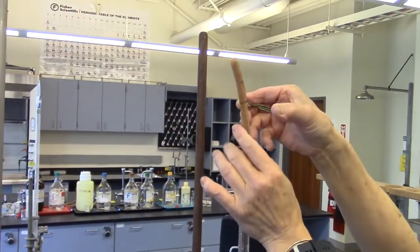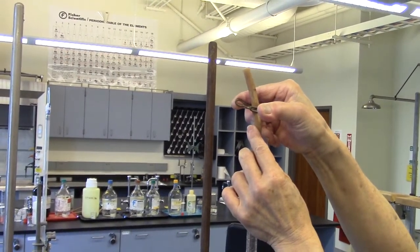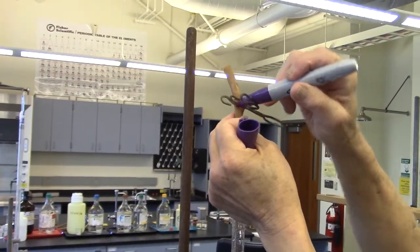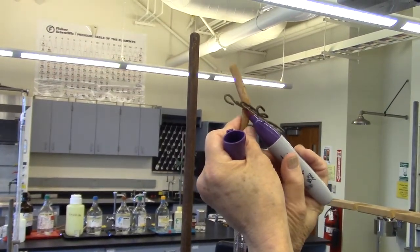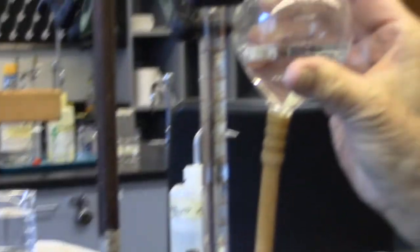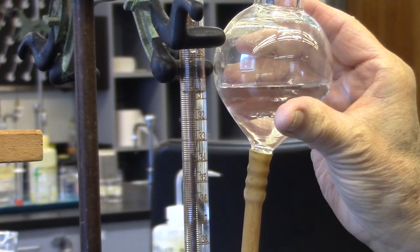Using the pinch clamp, clamp off the tubing at the top and mark the clamp's position. Now the first measurement is ready to be taken. Take the leveling bulb and line it up with the water level in the manometer. Record the volume reading from the manometer.